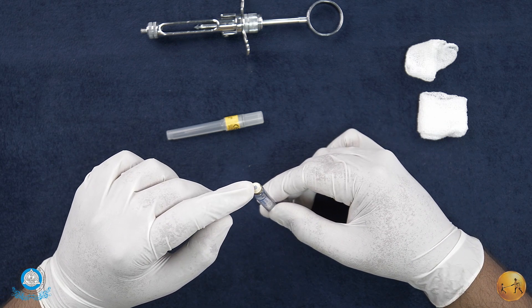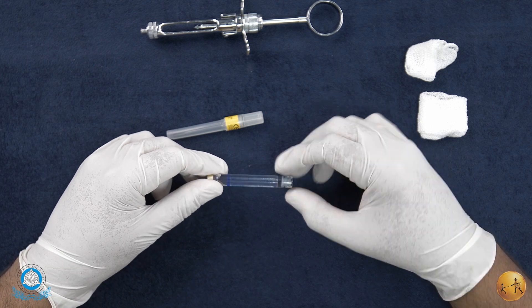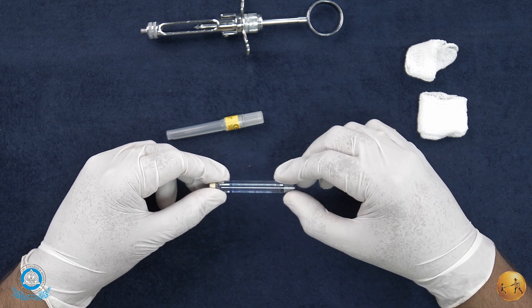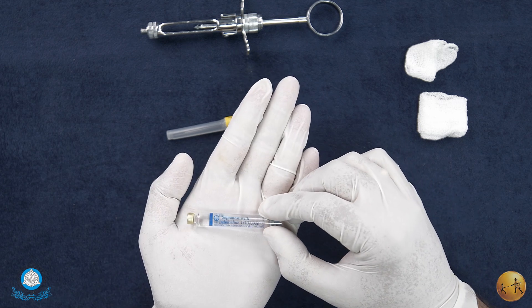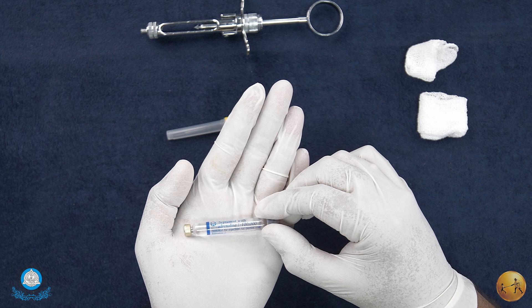That's the gray diaphragm that you see. Each cartridge is color coded for the particular drug that it has. You can see the blue color code here - this has articaine in it.